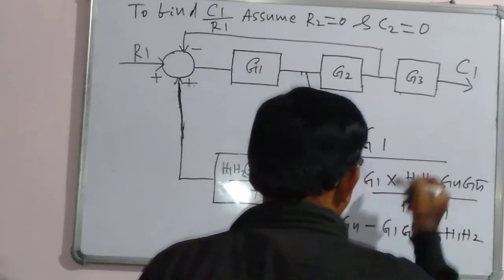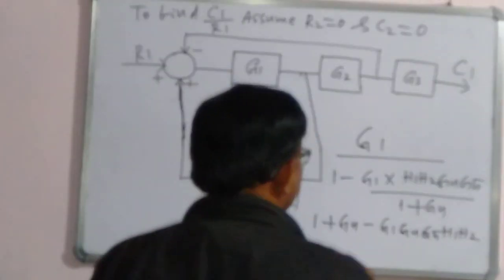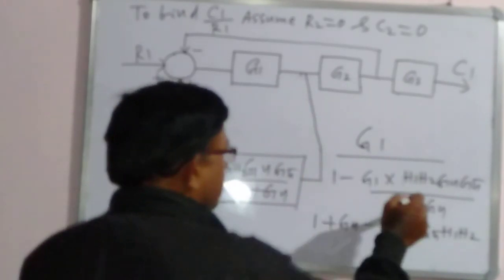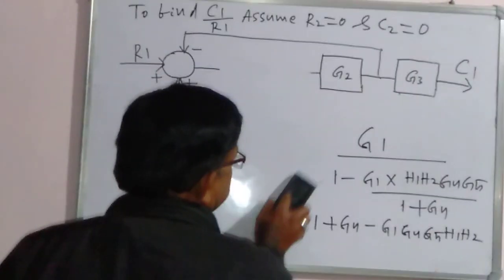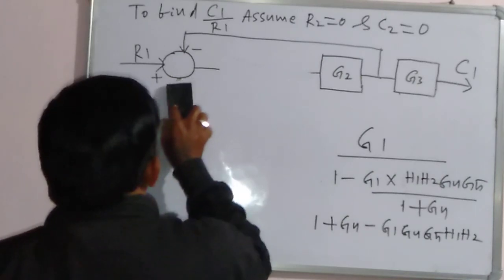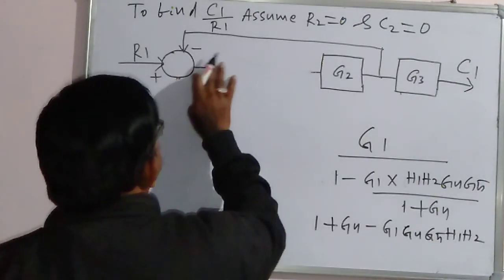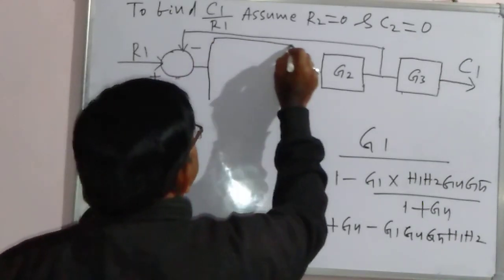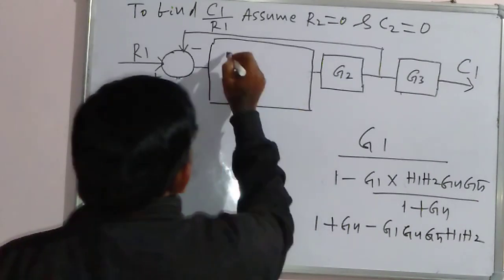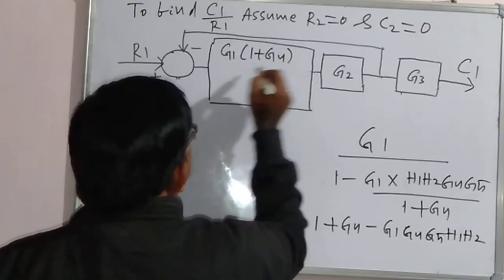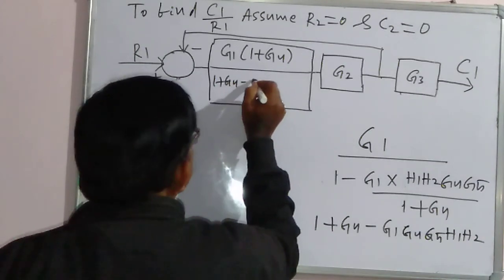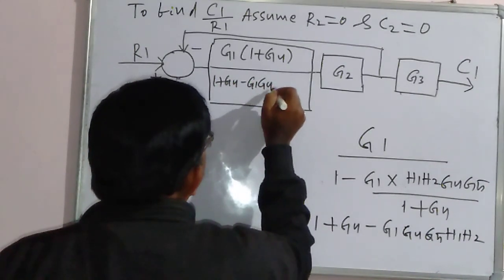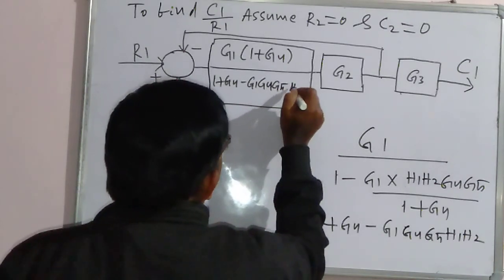Taking the LCM: 1 plus G4 minus G1·G4·G5·H1·H2. Going to the numerator side, that is G1 into 1 plus G4, divided by 1 plus G4 minus G1·G4·G5·H1·H2.